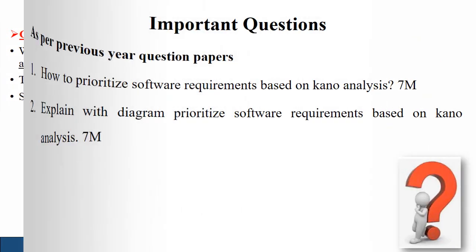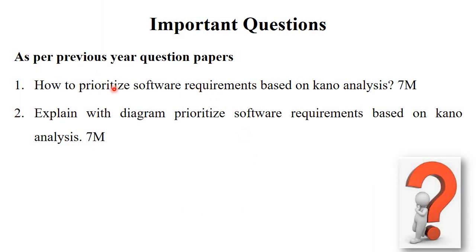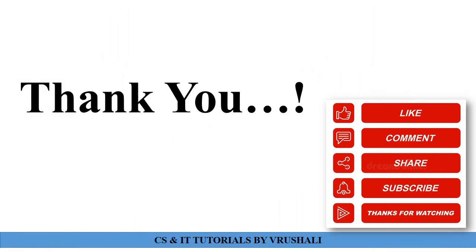In exams, questions have been asked in previous year question papers like: how to prioritize software requirements based on Kano analysis — explain with diagram. At that time you have to draw this diagram and explain those five categories in detail, typically for seven marks. That's all about the Kano model. Thank you, keep learning.